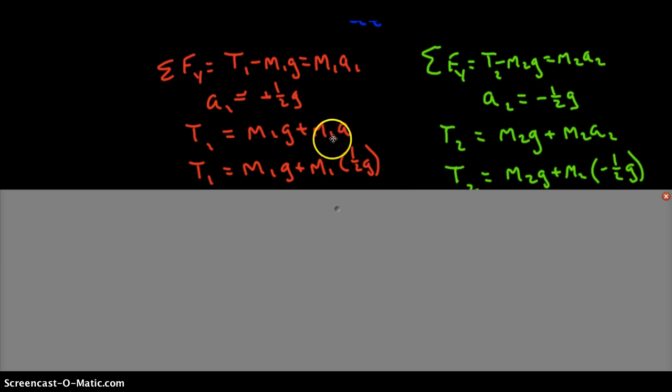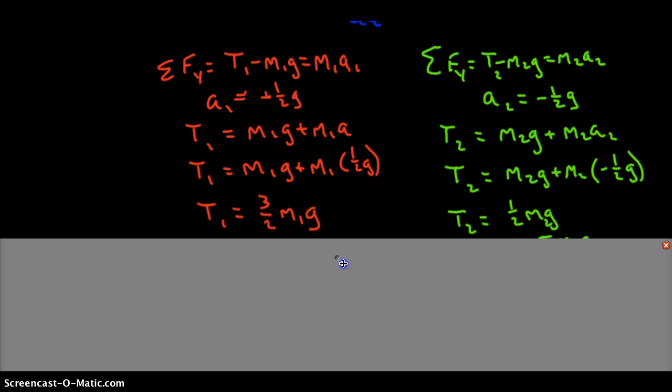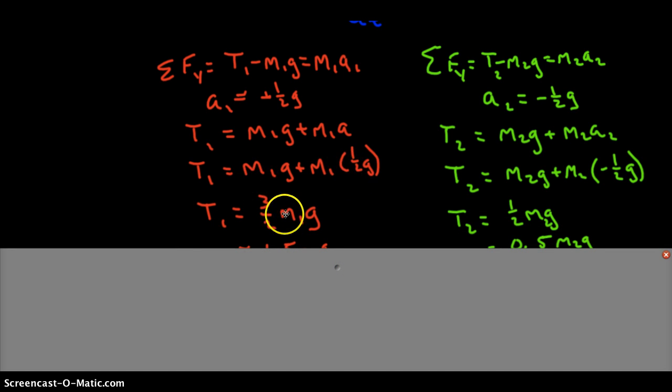And when we solve for T1 right here, and solve for T2 here, and substitute those two values in, that leads finally to an expression for T1 of three-halves M1g, and for T2 of one-half M2g.